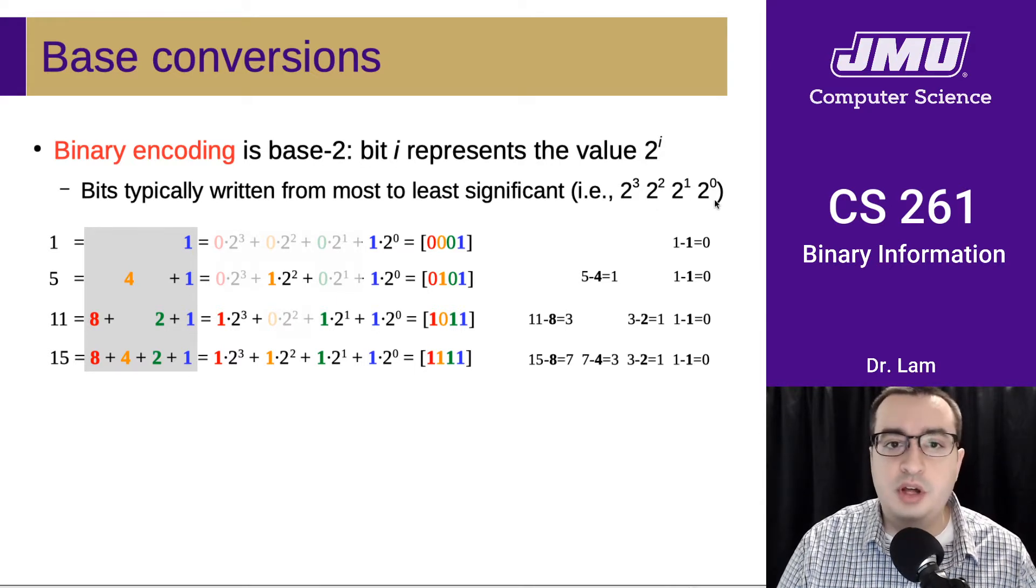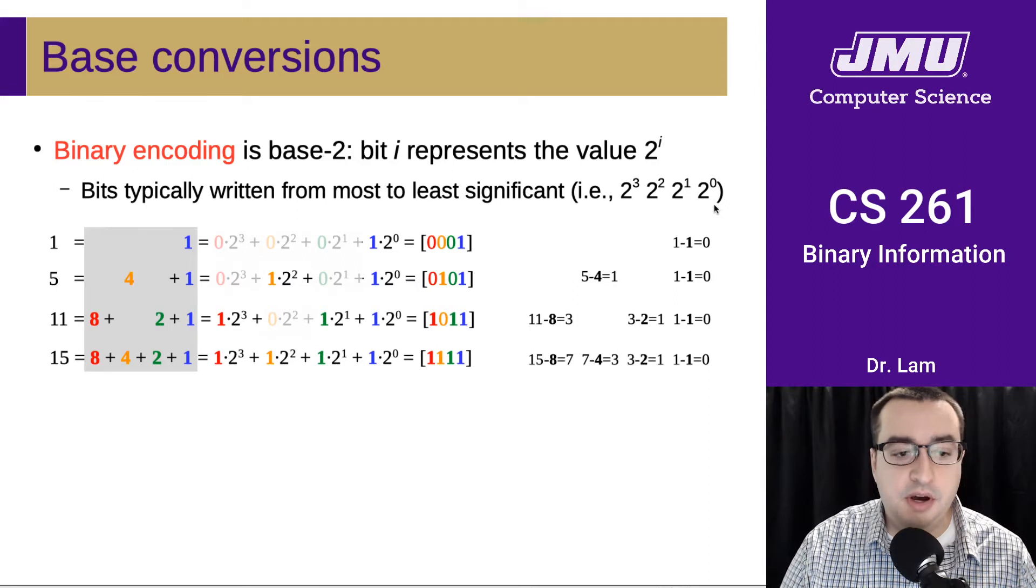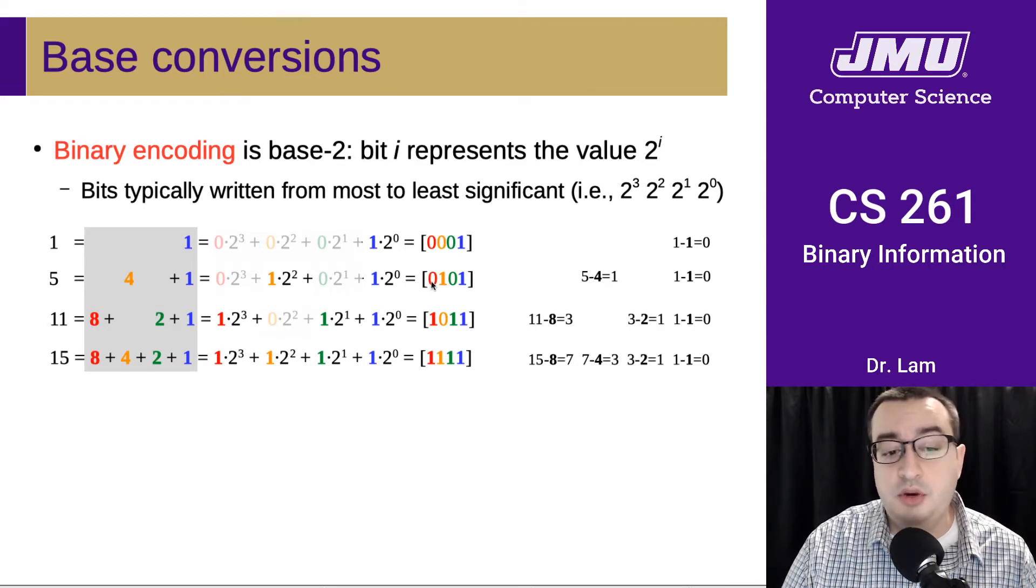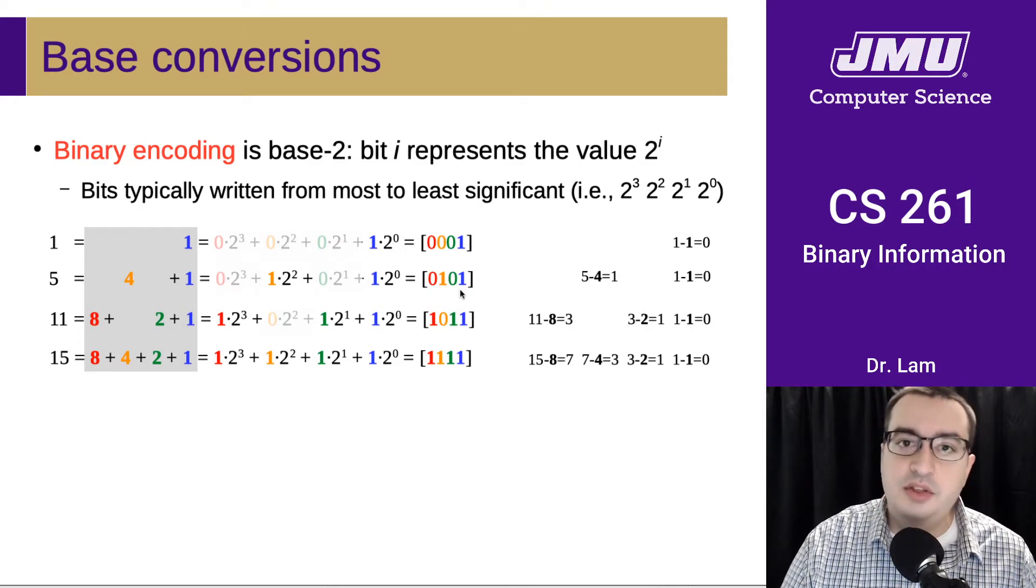It's worth pondering this slide for a bit, maybe pausing the video and thinking about this. Just to highlight one or two examples: 5 can be written in binary as 0101, or we don't need the leading 0, so this could just be 101. There are a couple different ways to think about this.